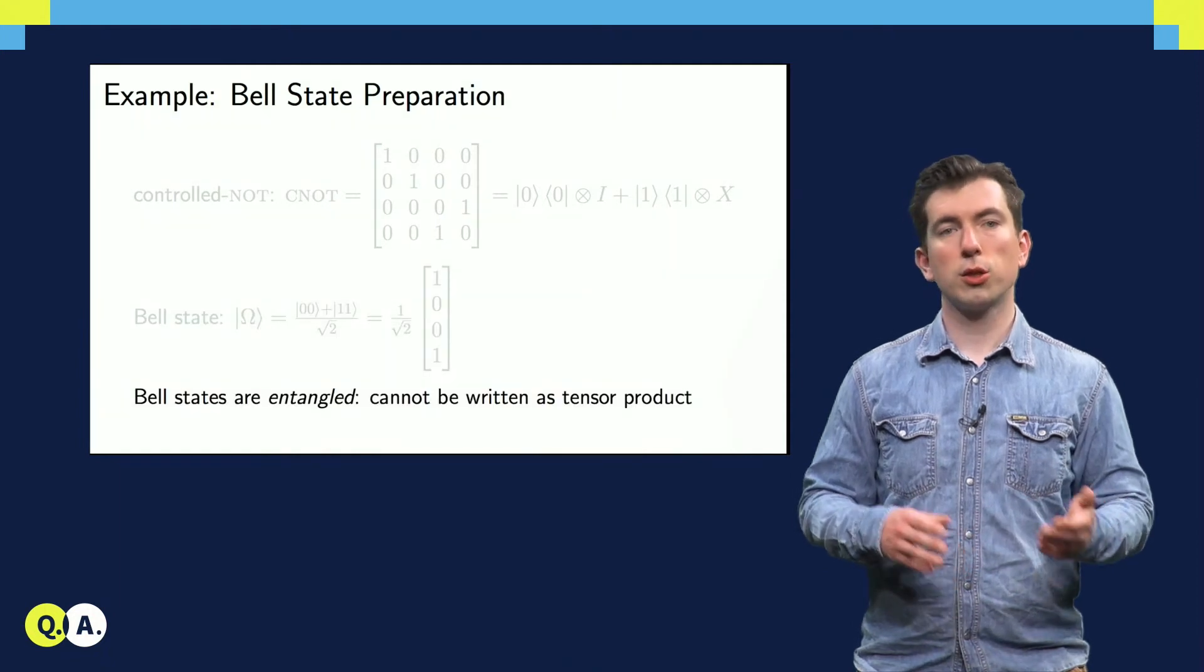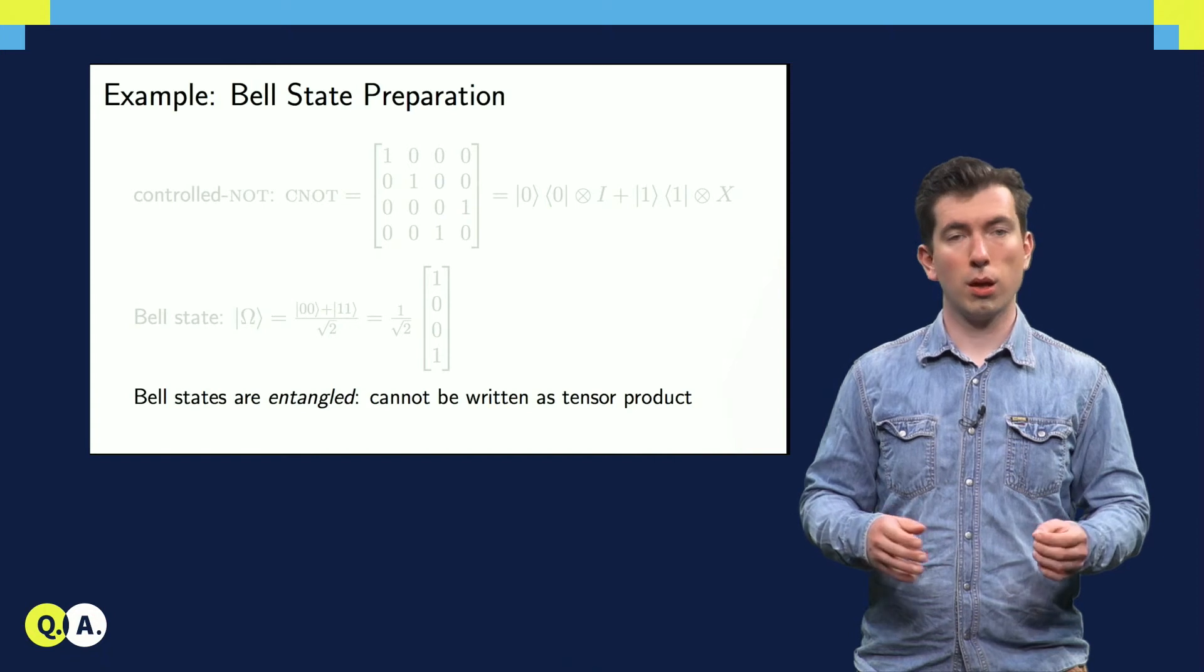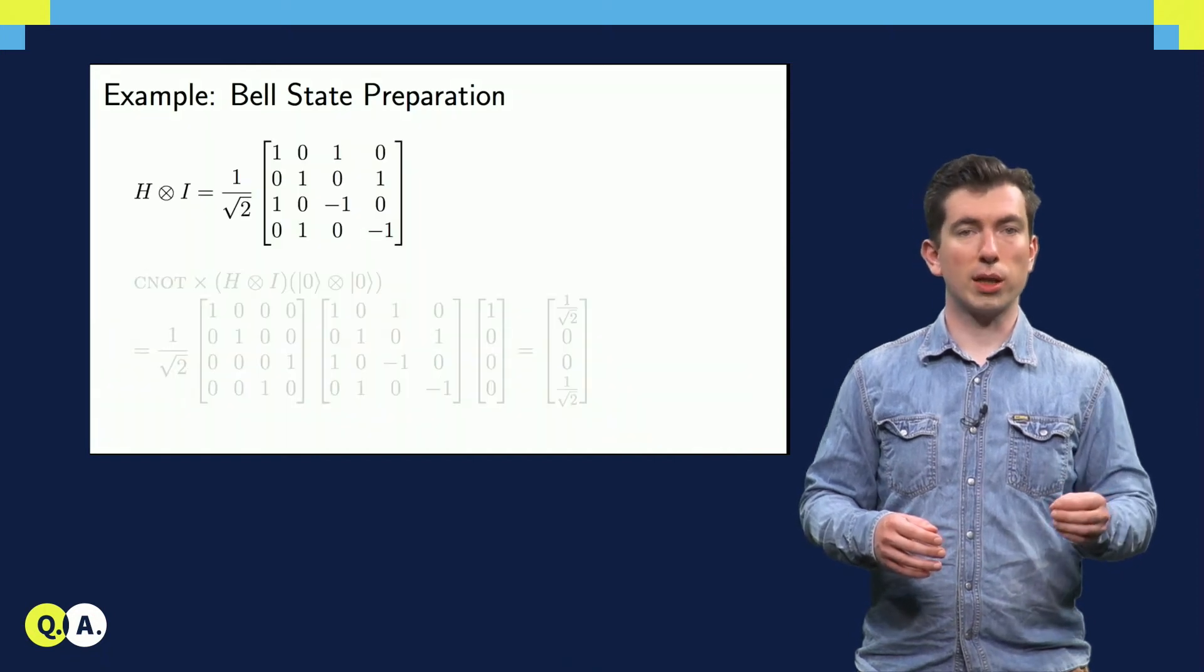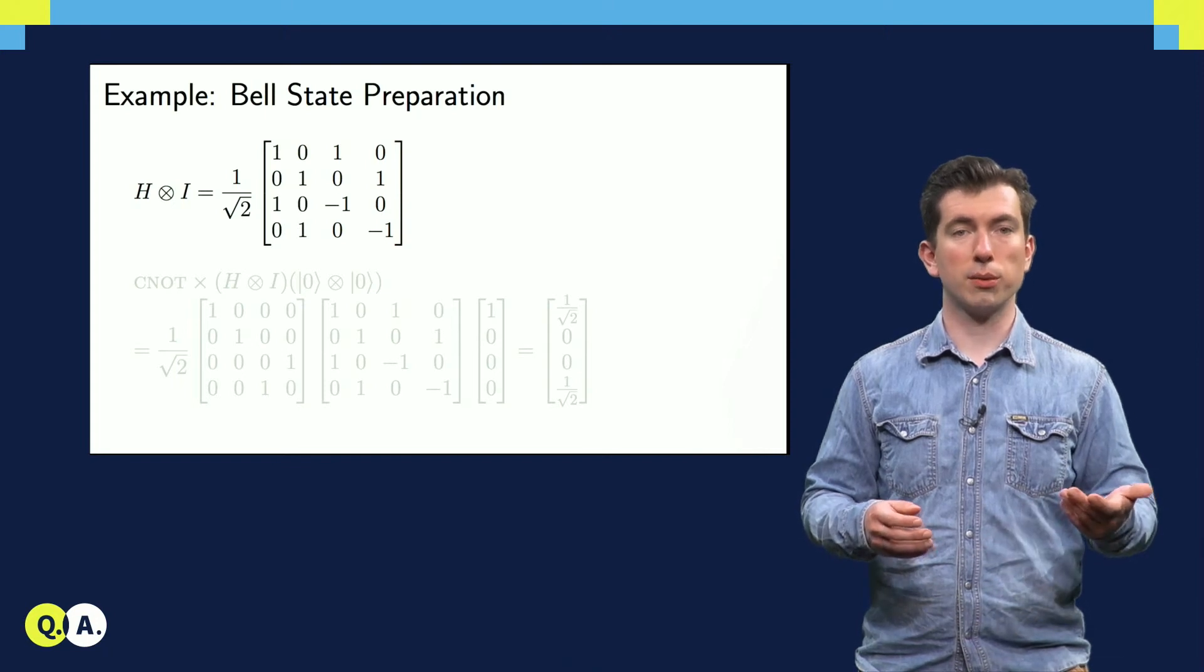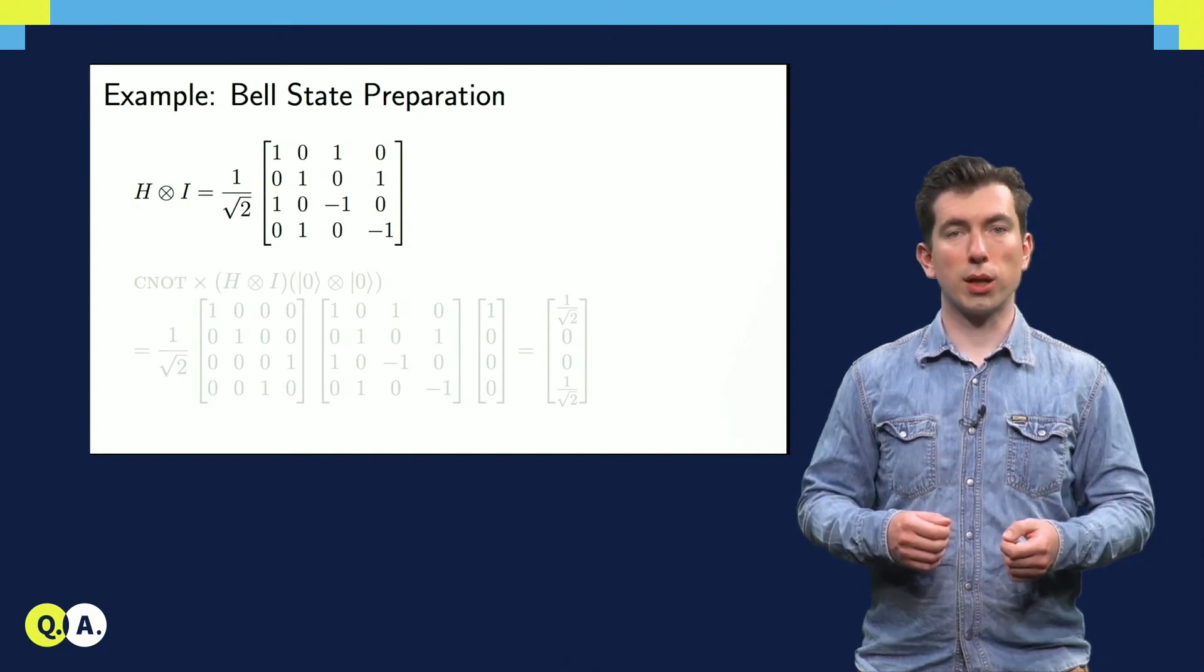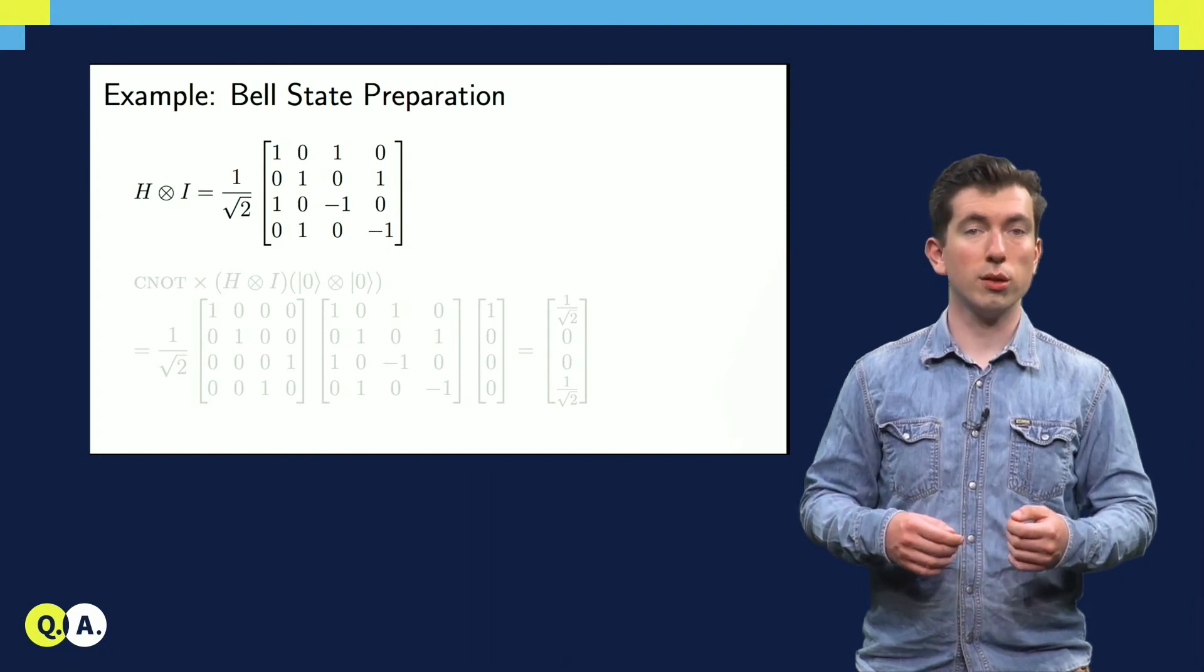We can write it out using either ket notation or as a column vector. Note that the Bell state, just like the CNOT, cannot be written as a tensor product. The first step in preparing the Bell state is to perform a Hadamard operation on the first qubit, which has been initialized in the zero state. So we calculate the tensor product of the Hadamard with the identity, since we're not going to do anything to the second qubit immediately.